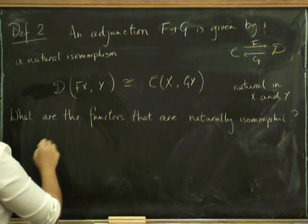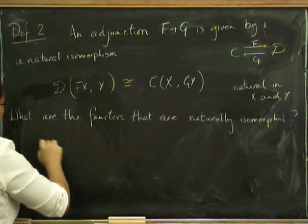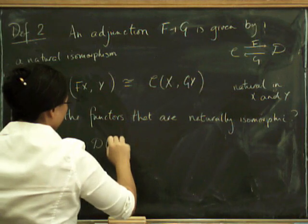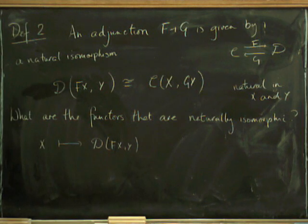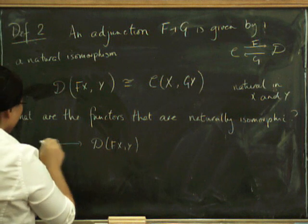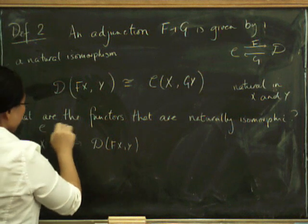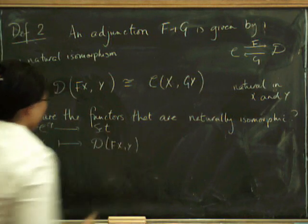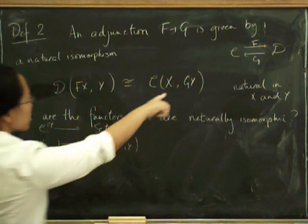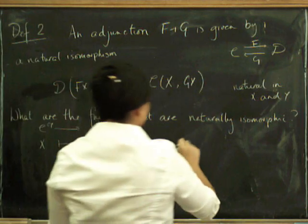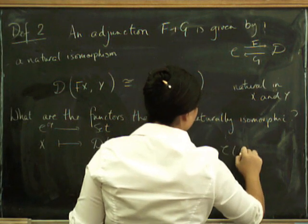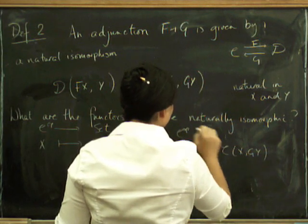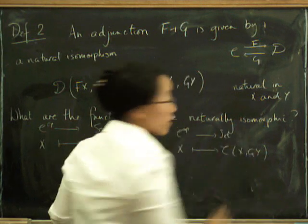Well there's one that takes X and sends it to this set here. This is in fact a functor. X is an object of C, and so this is a functor from C op to Set. And the other one takes X and sends it to this set.